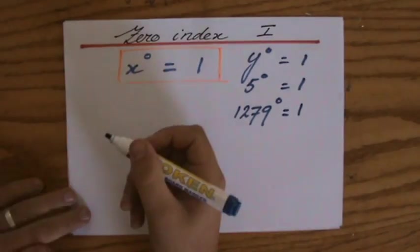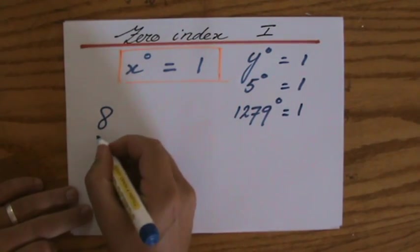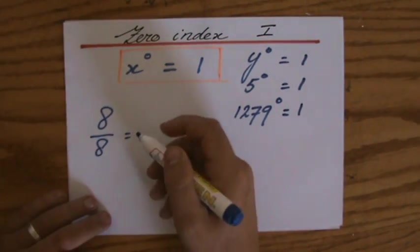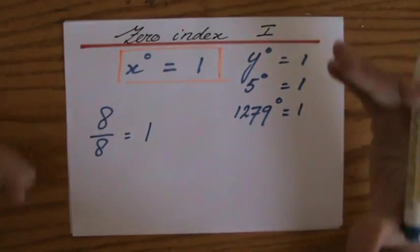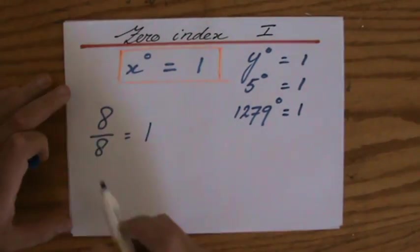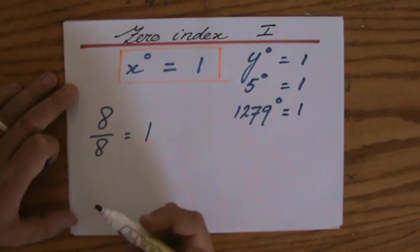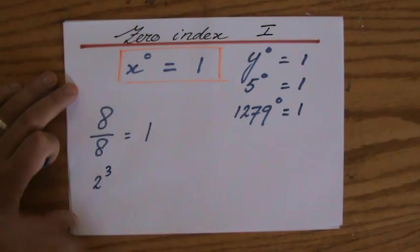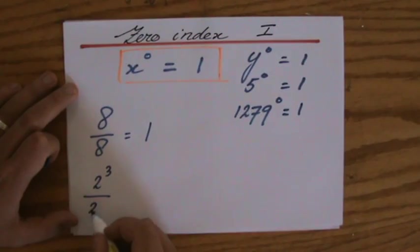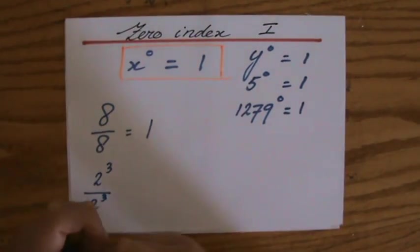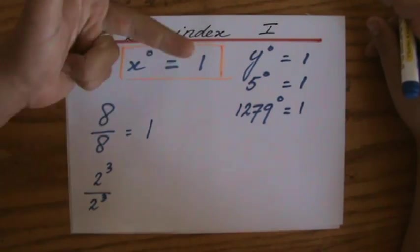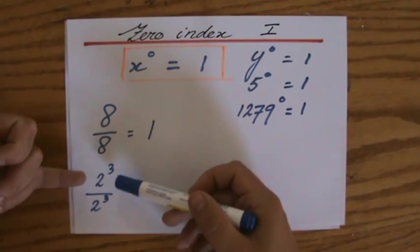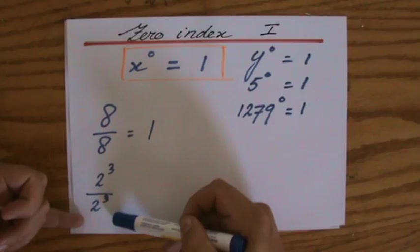That is not something you have to remember. Consider this: what is 8 divided by 8? All of you would answer: that is 1, that's easy. Now I'm going to rewrite the question 8 divided by 8 in index notation. 8 is the same as 2 to the power 3, so 8 divided by 8 becomes 2 to the power 3 divided by 2 to the power 3.